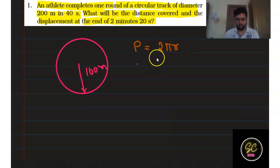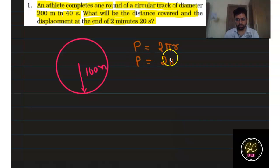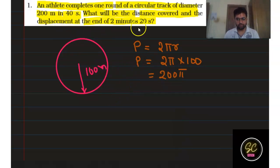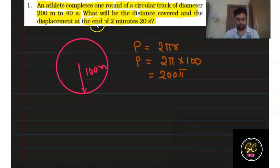First we calculate the path length of one circle: 2π × 100 = 200π meters. So a distance of 200π meters is covered in 40 seconds. Now we find the distance covered and displacement at the end of 2 minutes and 20 seconds.